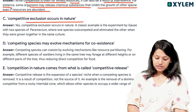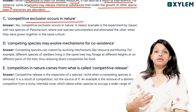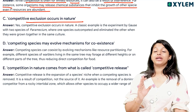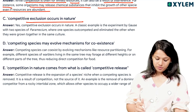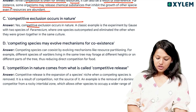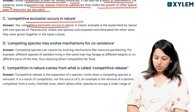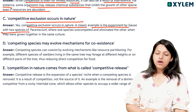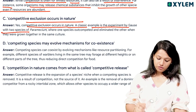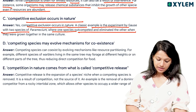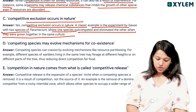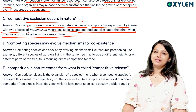Competitive exclusion principle: competitive exclusion occurs in nature. A classical example is the experiment by Gause with two species of Paramecium, where one species out-competed and eliminated the other when they were grown together in the same culture.